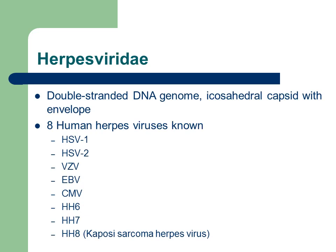Another big family is Herpesviridae — again, another double-stranded DNA genome. This organism has a capsid that has an icosahedral shape, and it is enveloped. There are eight human herpes viruses that are currently known: herpes simplex virus 1 and 2, varicella zoster virus, Epstein-Barr virus, cytomegalovirus, human herpes virus 6, 7, and 8.